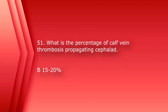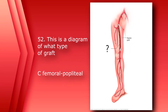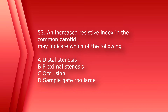Number 52: This is a diagram of what type of graft? A) dialysis graft, B) femoral-femoral graft, C) femoral-popliteal, or D) aortofemoral. The answer is C, femoral-popliteal.